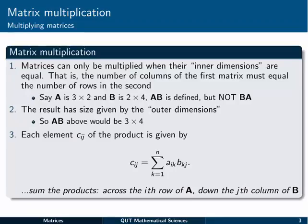So here it is. First of all, like addition, we have to have special shape matrices in order to multiply them together, but the requirement is different. Matrices can only be multiplied when their inner dimensions are equal. That means the number of columns in the first matrix must equal the number of rows in the second. For example, if A is 3 by 2 and B is 2 by 4, the inner dimensions, the twos, are equal, so we have matrix multiplication defined for A times B.